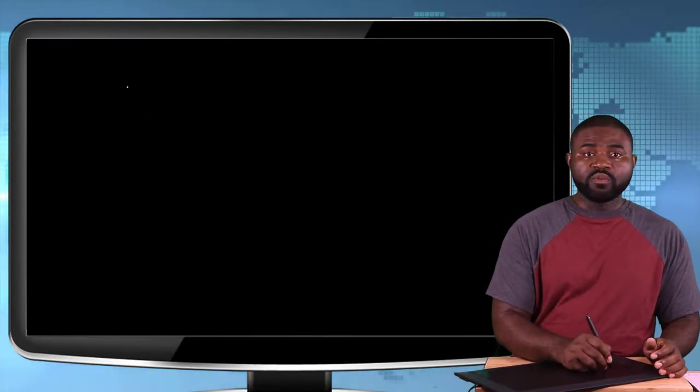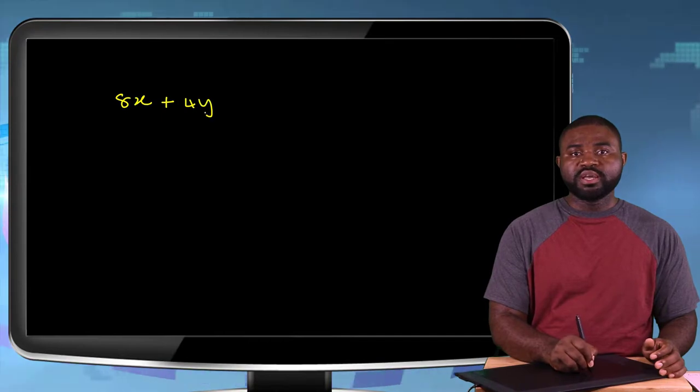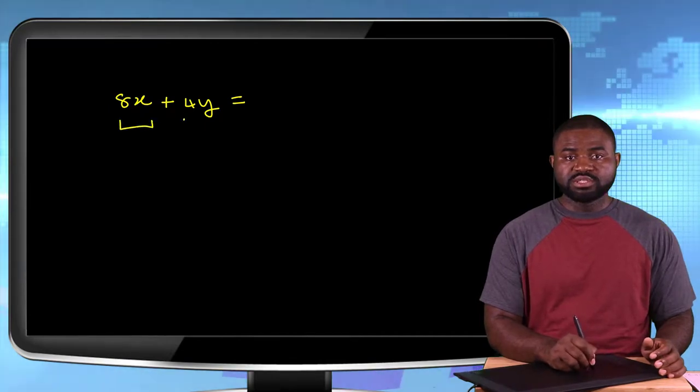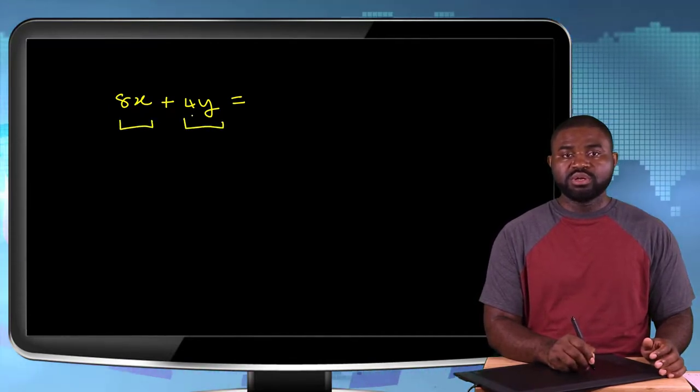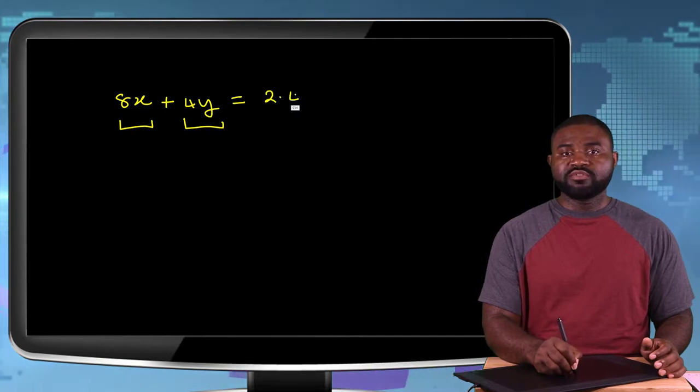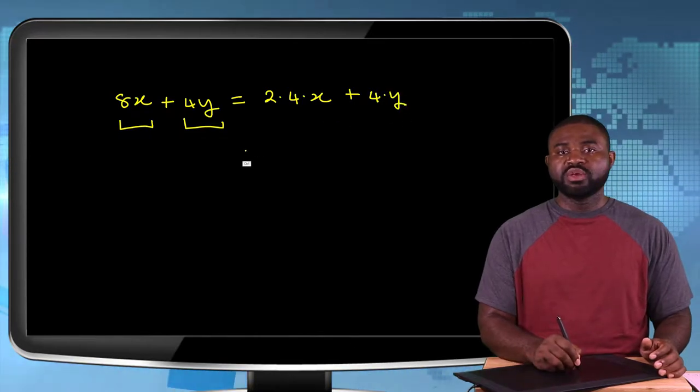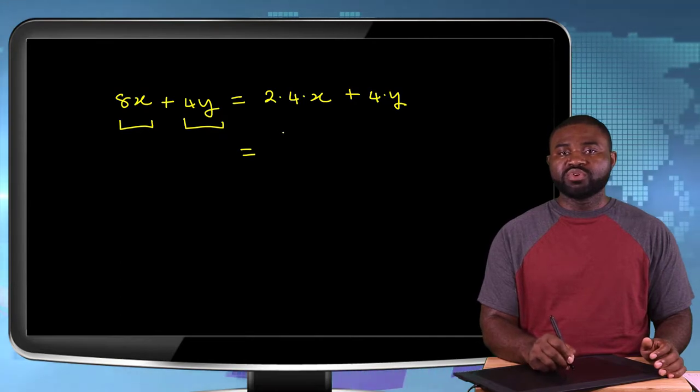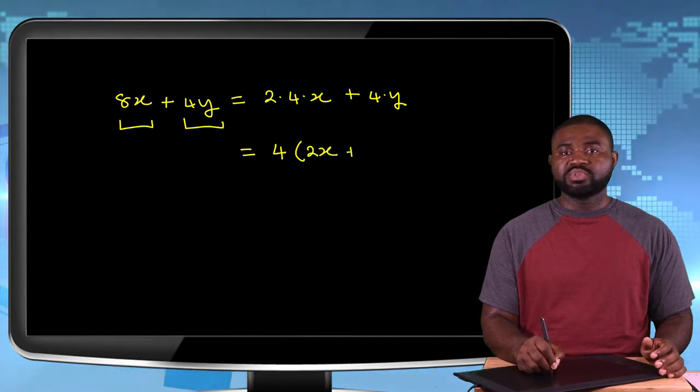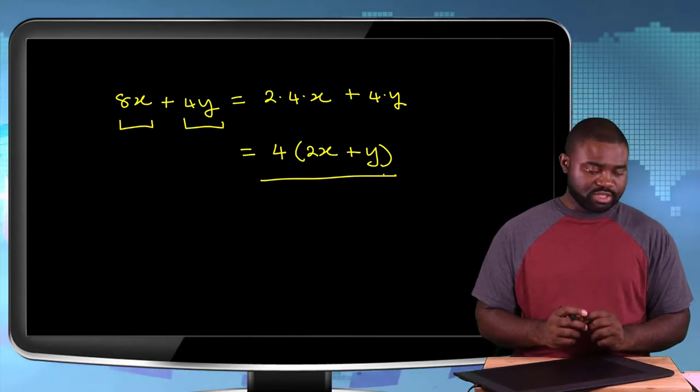So for example, if we have 8x + 4y, remember when you look at these two terms—this is the first term and this is the second term—what is common? 4. So 8 is just like 2 multiplied by 4. So this is like 2×4×x + 4×y. We can simplify, and if we do so, if we take out 4, we are going to be left with 4(2x + y). We have introduced brackets. We call this factorization.